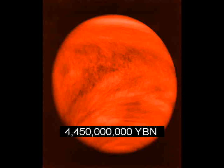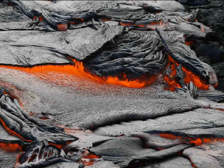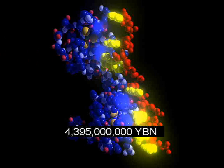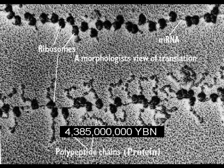Planet Earth cools. Crust forms. Water condenses and falls to make the first Earth oceans, lakes, and rivers. Larger molecules form on Earth like amino acids and sugars. Nucleic acids form or arrive on Earth.